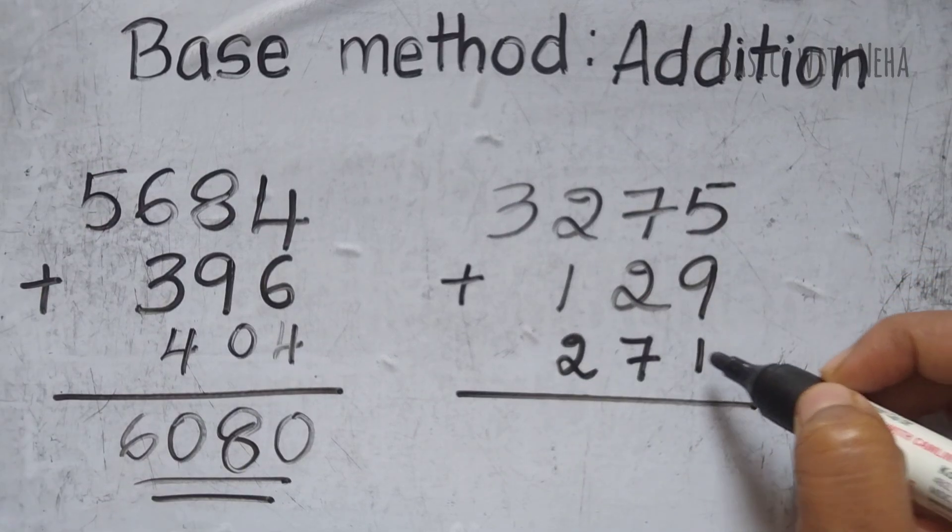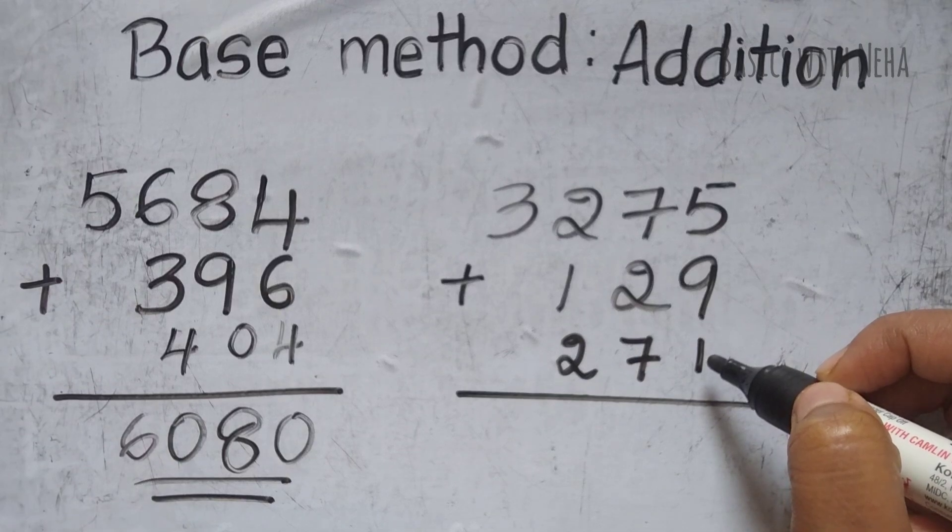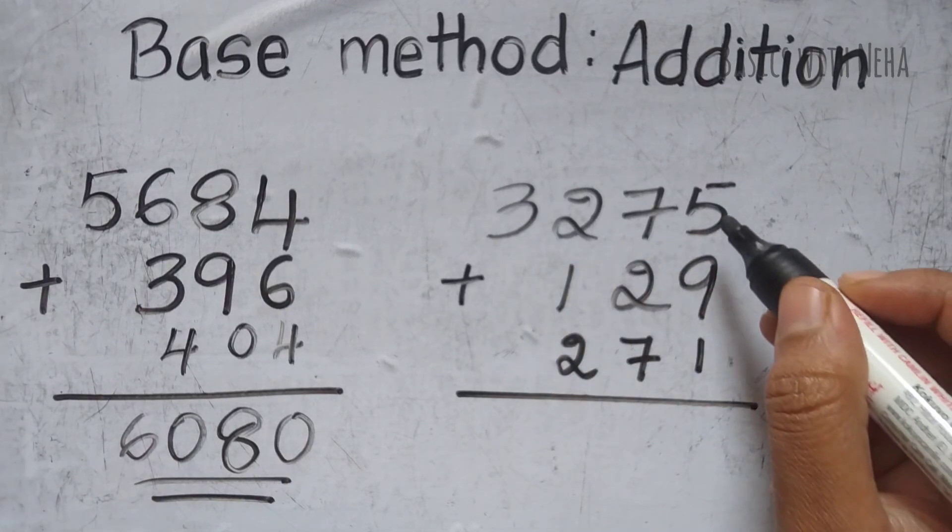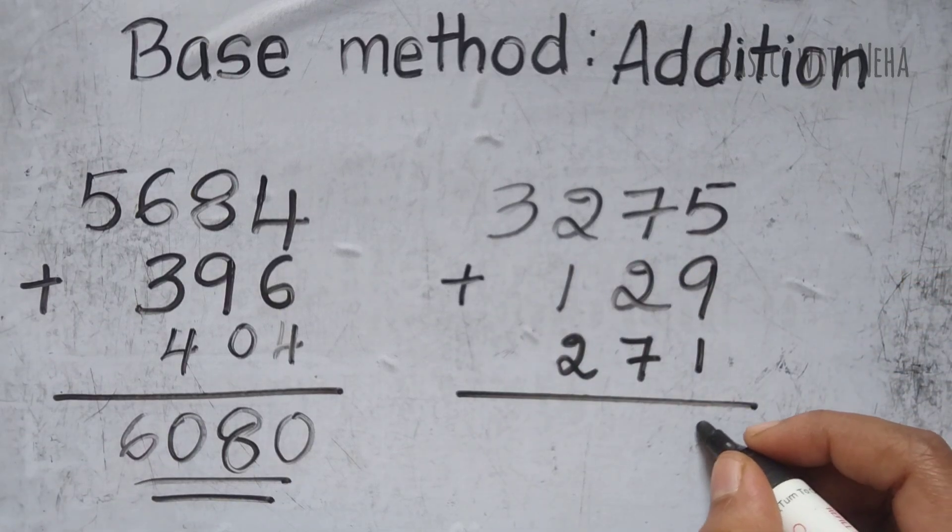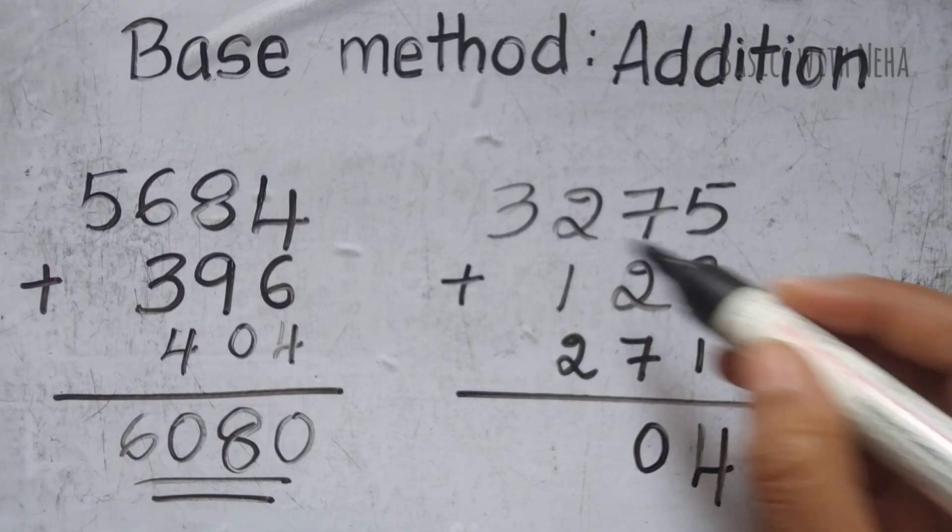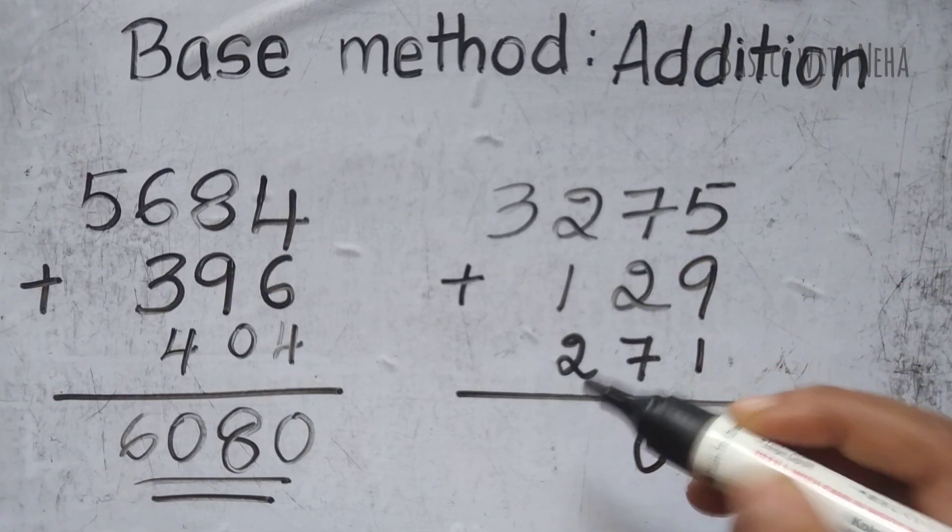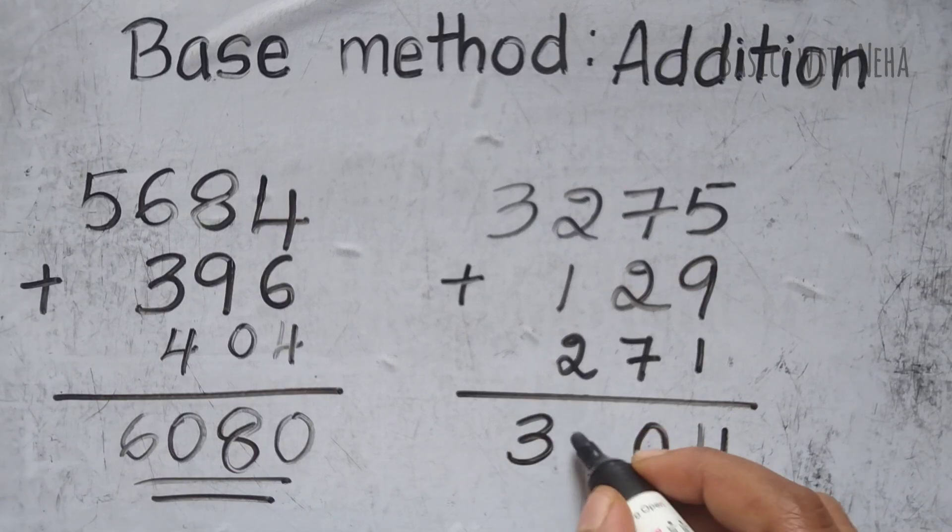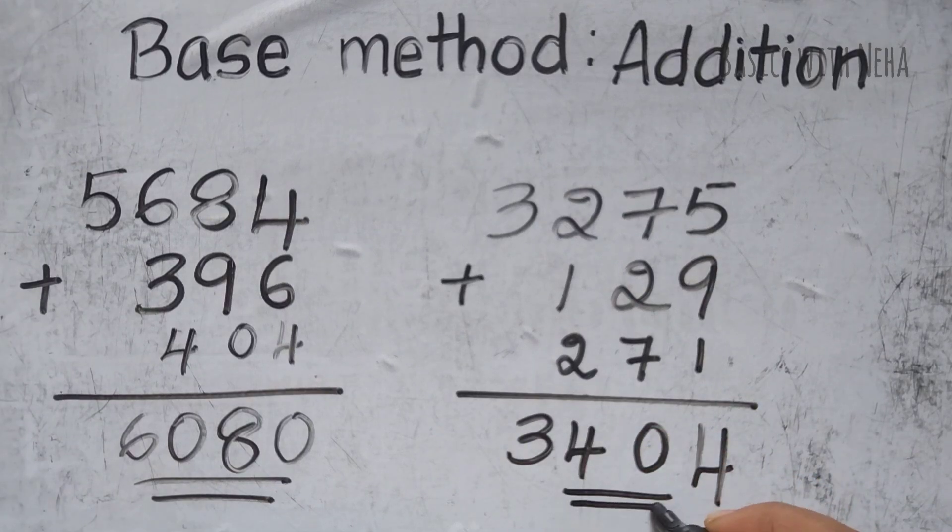Now you have to subtract the complement and add the base. So 5 minus 1 is 4. 7 minus 7 is 0. 32 plus 2 is 34. And this will be my final answer.